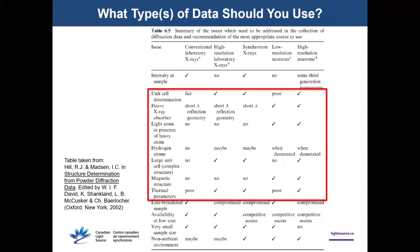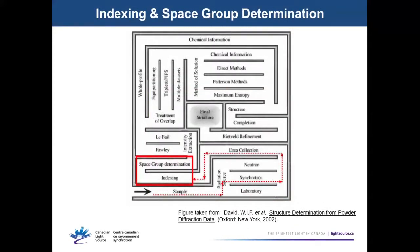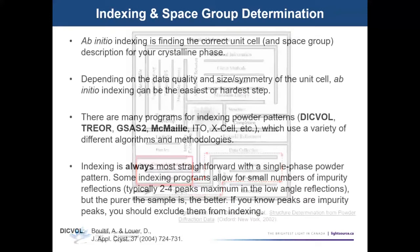Ab initio indexing is a really interesting step. Depending on sample purity, data quality, and cell complexity, it can be the easiest step or the most challenging bottleneck. I often start with a program called DICVOL because it uses a very exhaustive strategy, making it really good for finding cells of monoclinic symmetry and higher. Because of that exhaustive strategy it's a little slower, so if you suspect a triclinic cell you often want to use a program called TREOR. Indexing is always easier with a pure sample.